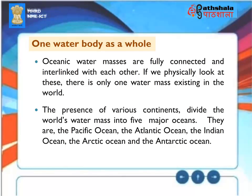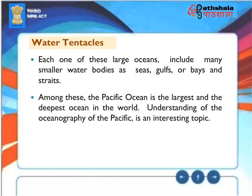Oceanic water masses are fully connected and interlinked with each other. If we physically look at these, there is only one water mass existing in the world. The presence of various continents divides the world's water mass into five major oceans. Each one of these large oceans includes many smaller water bodies such as seas, gulfs, bays, and straits. Among these, the Pacific Ocean is the largest and the deepest ocean in the world, making the study of its oceanography an interesting topic.